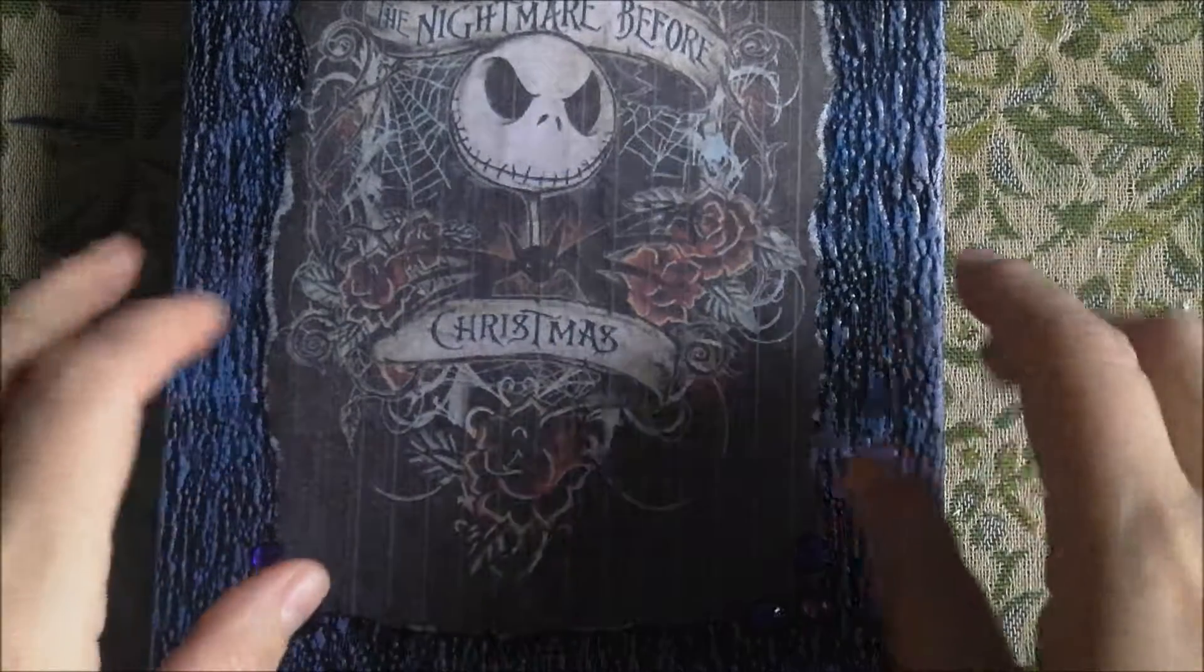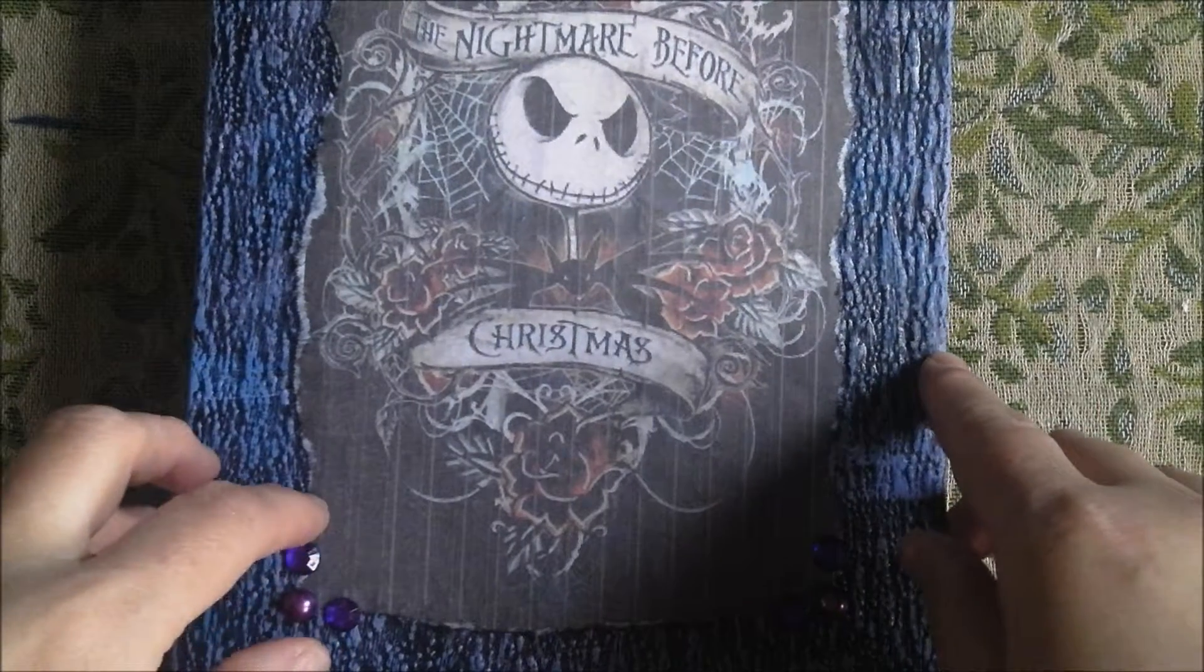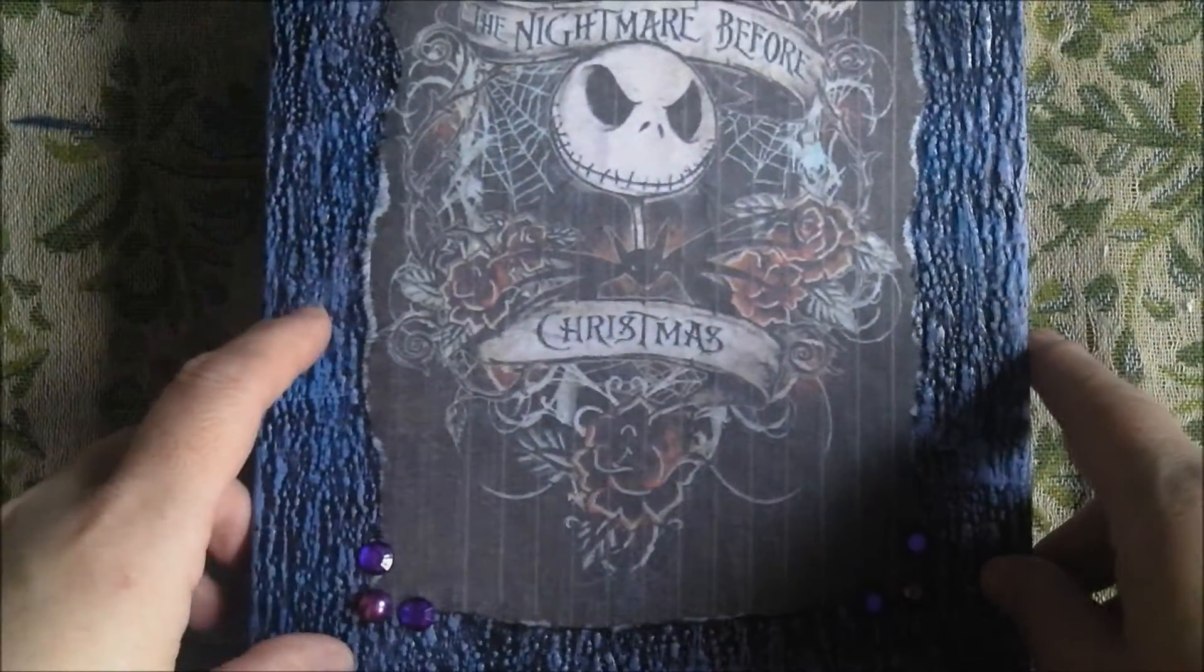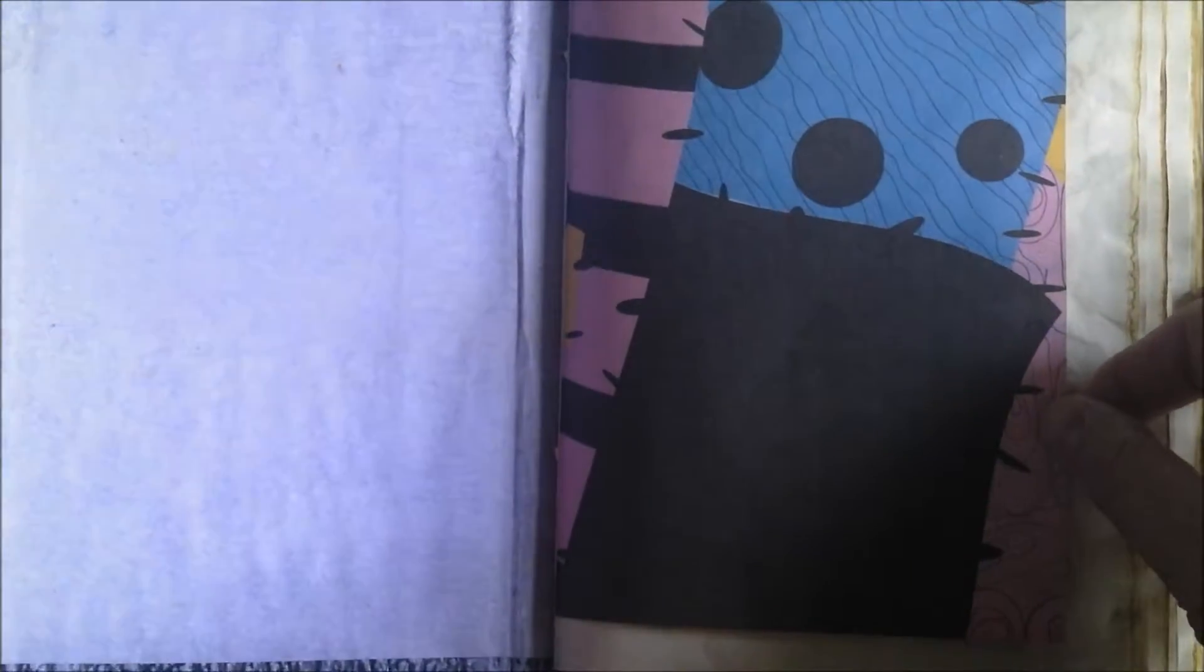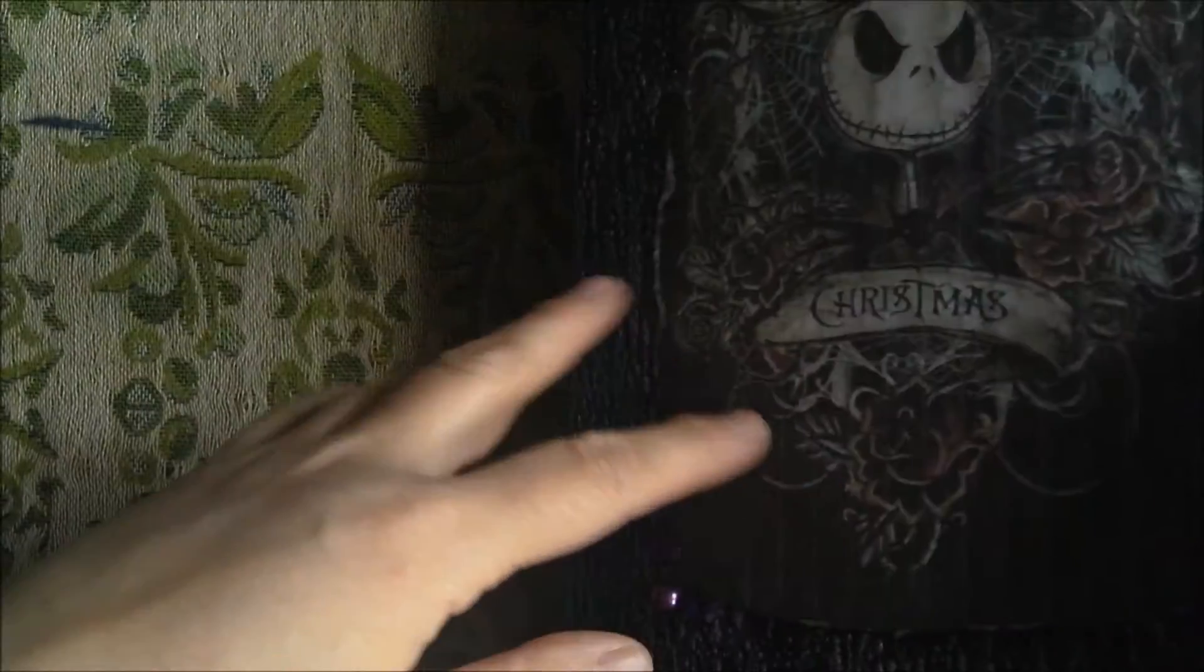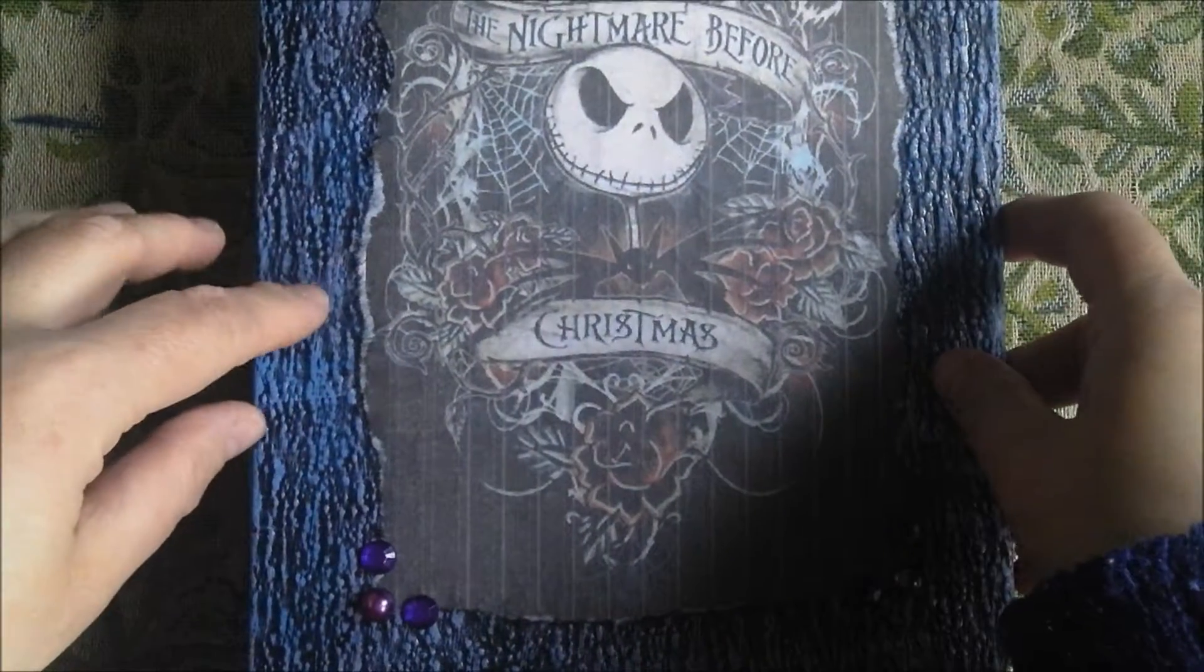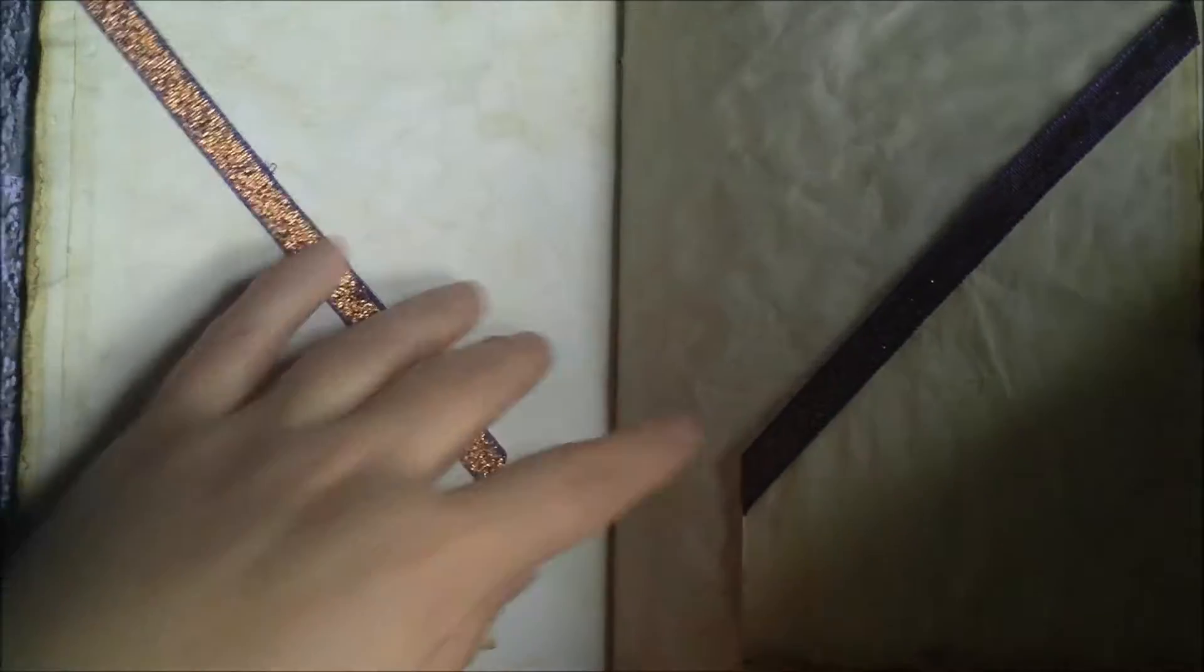This is my Nightmare Before Christmas one that will be going up into my Etsy shop. So just a quick look through. This one is more purple and blue this time. I think I showed my last one which was just purple. It's got digital papers, tea stain papers, and pockets with ribbons. It's pretty much that all the way through.